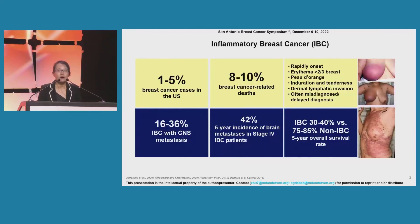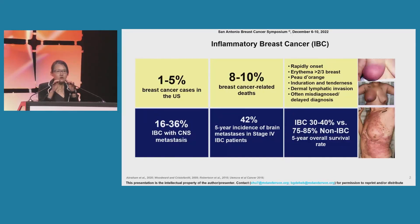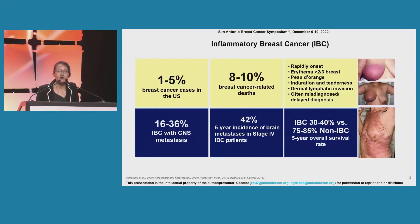IBC accounts for only 1 to 5% of breast cancer in the United States, but because it's so aggressive, it accounts for a disproportionate amount of overall breast cancer mortality. The diagnosis is based on clinical criteria. IBC patients have a high risk of developing central nervous system metastasis, especially in stage IV IBC patients. Around 42% of patients will have brain metastasis within 5 years, and the 5-year survival remains really low, partly because of this high risk of brain metastasis.